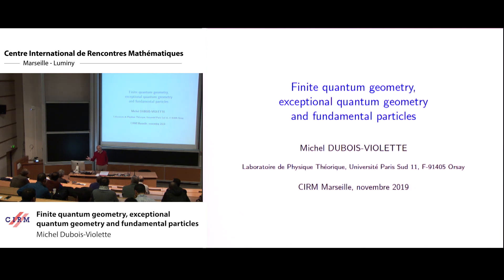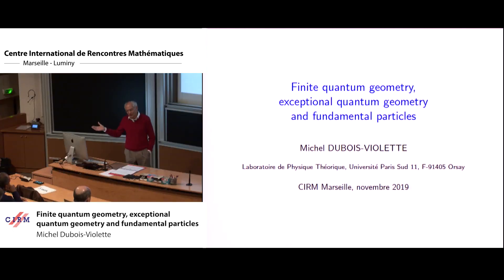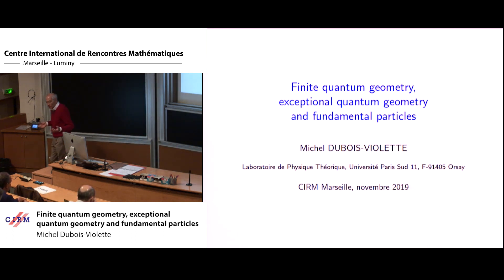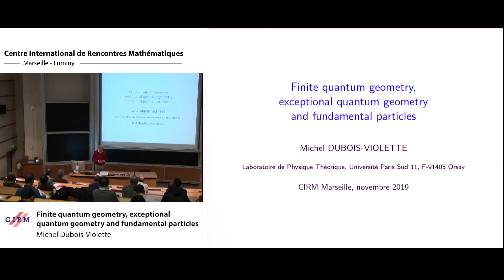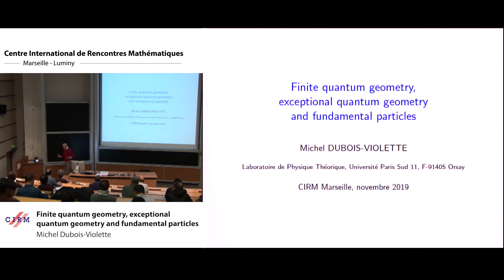This means that quarks are described by a quantum field or classical field in Minkowski space — spin one-half with values in C³, a three-dimensional complex space. There is something which has no explanation, but on which I will give a description: for each lepton, for instance the electron, there is an associated quark, and vice versa.